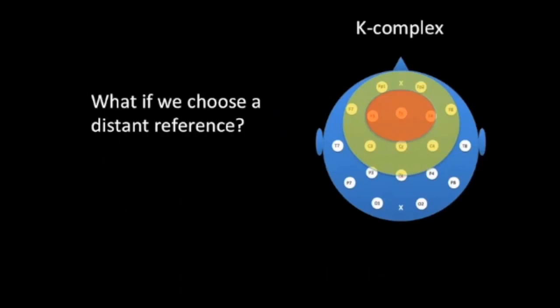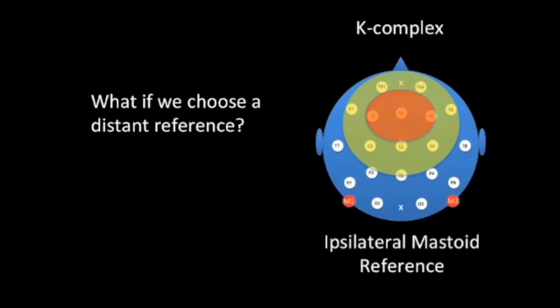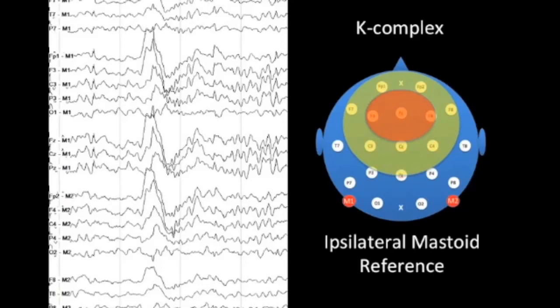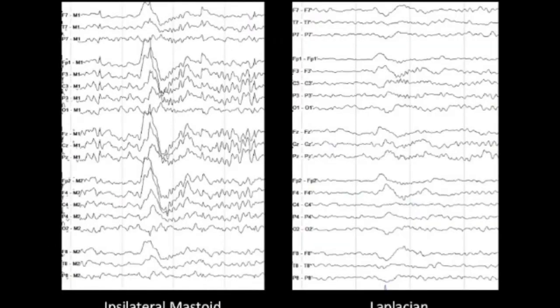What if we choose a distant reference? A distant reference has the advantage of being very far from a broad electrical field, maximizing the contrast between activity within the field and the distant electrode. A common reference montage to the ipsilateral mastoid process is far from the area of interest, generating maximal contrast. Applying the ipsilateral mastoid montage produces very high voltage activity, accentuating the K-complex dramatically compared to the Laplacian montage.